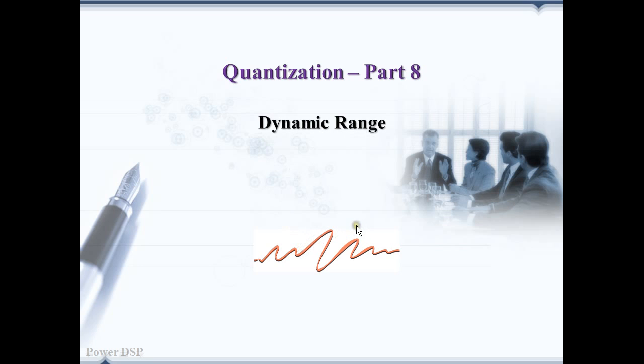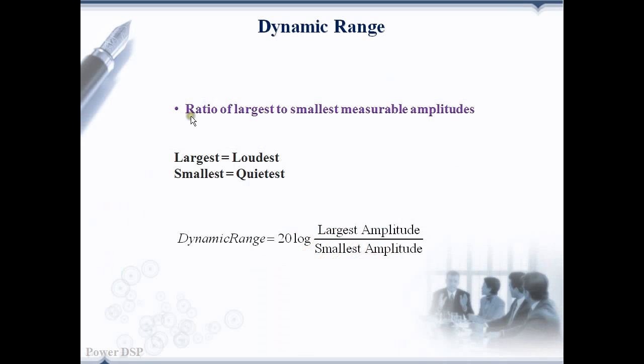Let's start with the dynamic range in this part. Dynamic range is the ratio of largest to smallest measurable amplitudes. The largest amplitude is the loudest one and the smallest amplitude is the quietest one. So we can also say the dynamic range is nothing but the difference between the loudest and quietest part of the signal.